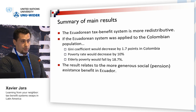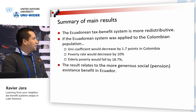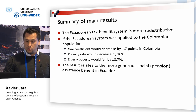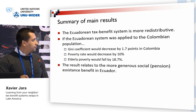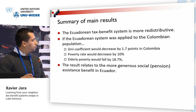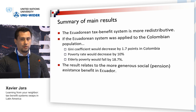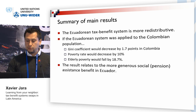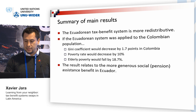Just a quick summary of results: what we find is that the Ecuadorian system is more redistributive than the Colombian one. Moreover, if the Ecuadorian tax benefit system was applied to the Colombian population, the Gini coefficient would decrease by 1.7 points in Colombia, poverty rate would decrease by 10%, and elderly poverty would fall by 18.7%. This result is associated to the more generous pension assistance in Ecuador.